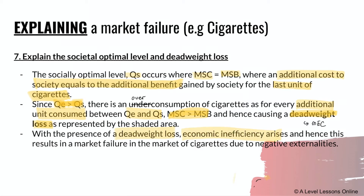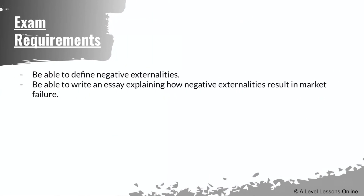With the presence of this deadweight loss, economic inefficiency arises and hence a market failure in the market for cigarettes due to negative externalities. To summarize: always start by identifying who is consuming and why they consume that amount — to maximize their own welfare where MPC equals MPB. Then explain what negative externalities are, state your assumptions about no positive externalities, draw your diagram, and conclude with the socially optimal level and deadweight loss to establish that a market failure exists.